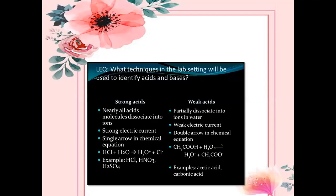In the lab, techniques used to identify acids and bases include observing dissociation: strong acids have nearly all acid molecules dissociate into ions, while weak acids only partially dissociate. Strong acids carry a strong electric current and weak acids carry a weak electric current. In chemical equations, a single arrow is used for strong acids and a double arrow (equilibrium arrows) for weak acids. For example: HCl + H2O → H3O⁺ + Cl⁻; acetic acid + H2O ⇌ products.